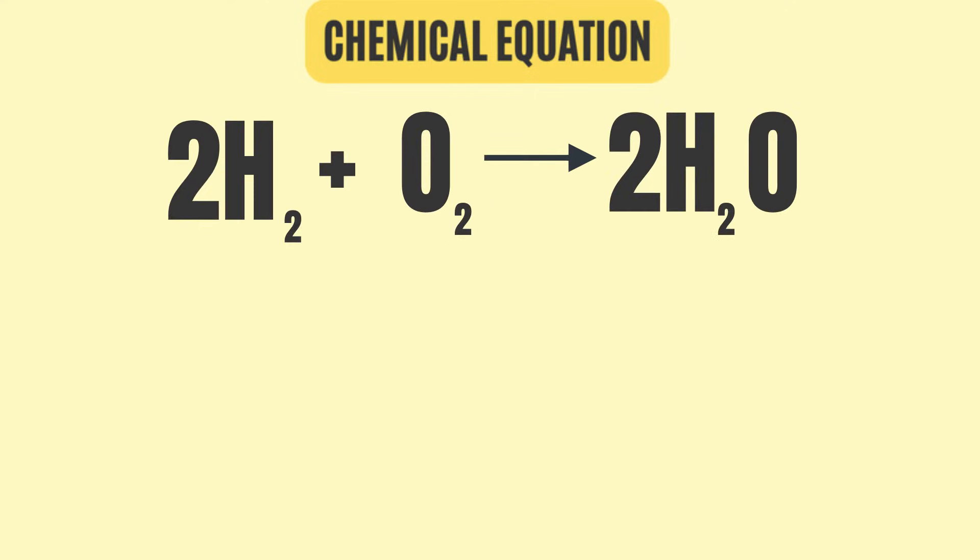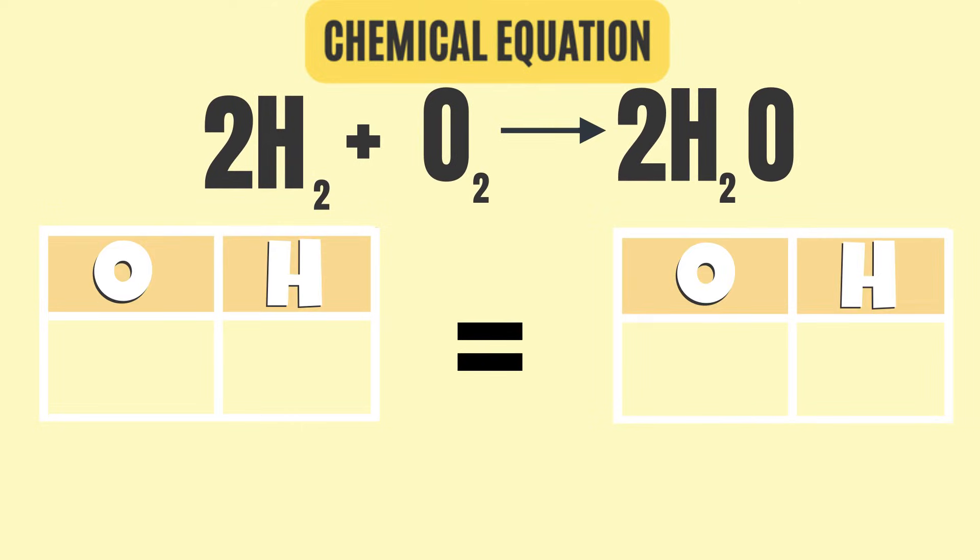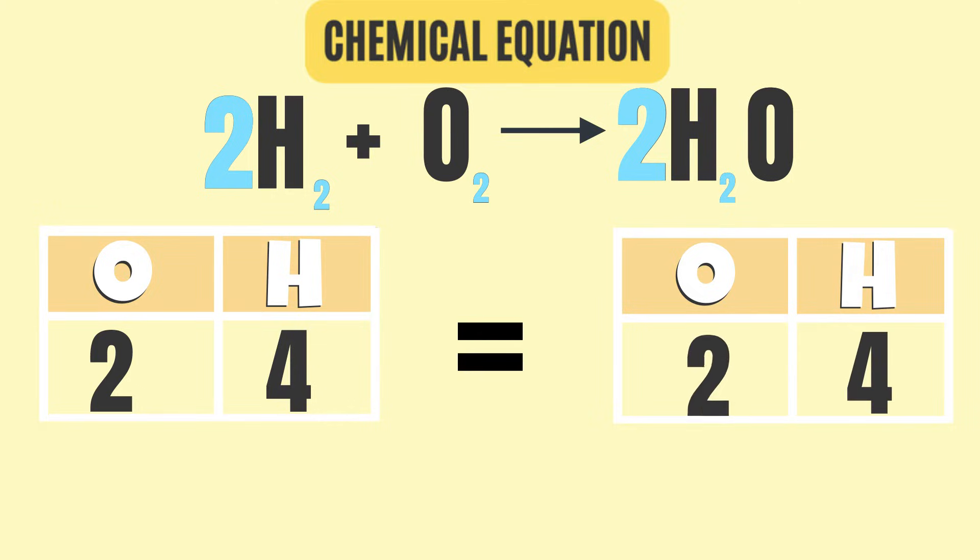Let's look at a chemical equation that shows the formation of water. In this equation, two molecules of hydrogen and one molecule of oxygen react to produce two molecules of water. This equation is balanced. We have four hydrogen atoms and two oxygen atoms in the reactant side. And on the product side, we have two molecules of water. So this means there are four hydrogen atoms and two oxygen atoms.